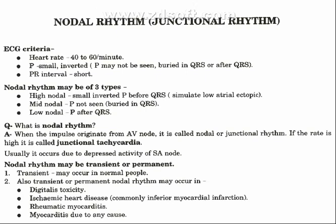Now we'll discuss nodal rhythm or junctional rhythm. The ECG criteria of junctional rhythm: heart rate is 40 to 60 beats per minute. P is small and inverted. P may not be seen — buried in QRS or after QRS. PR interval is short.